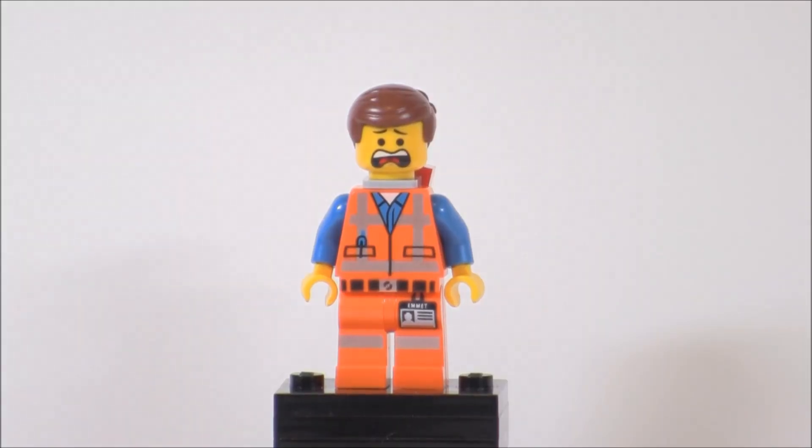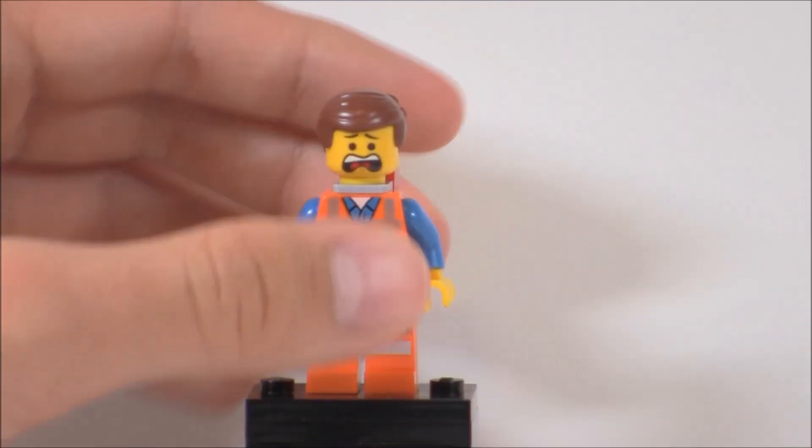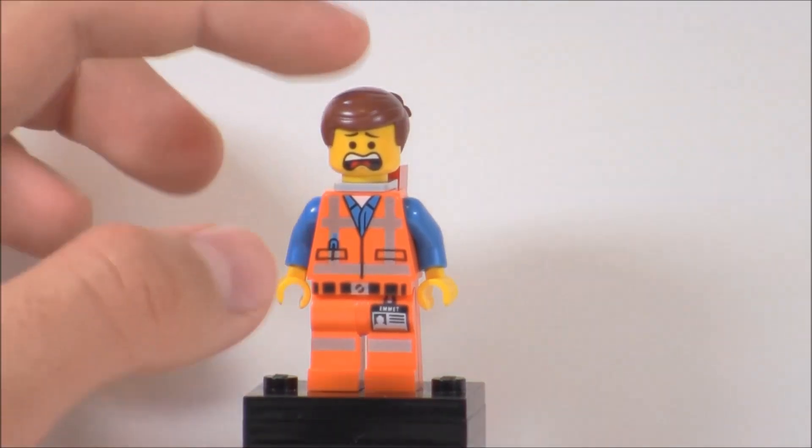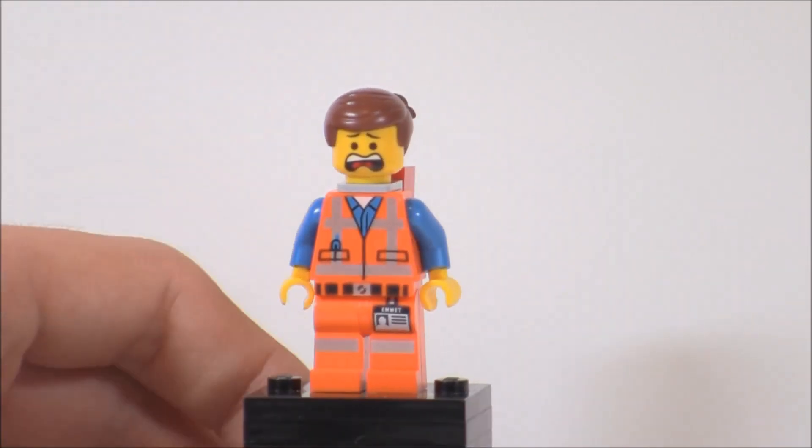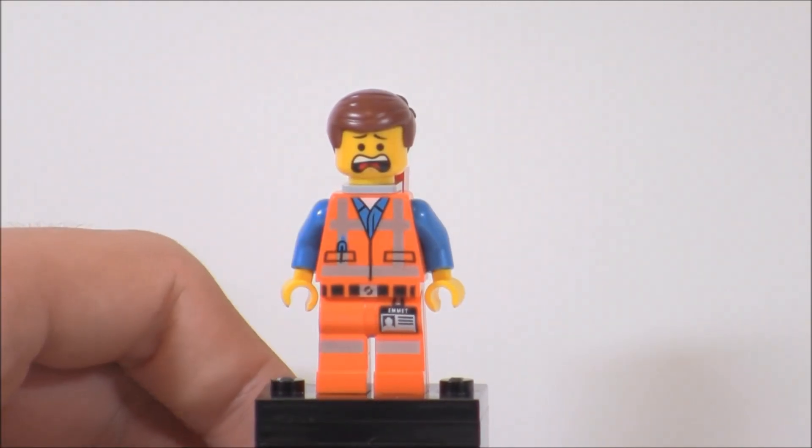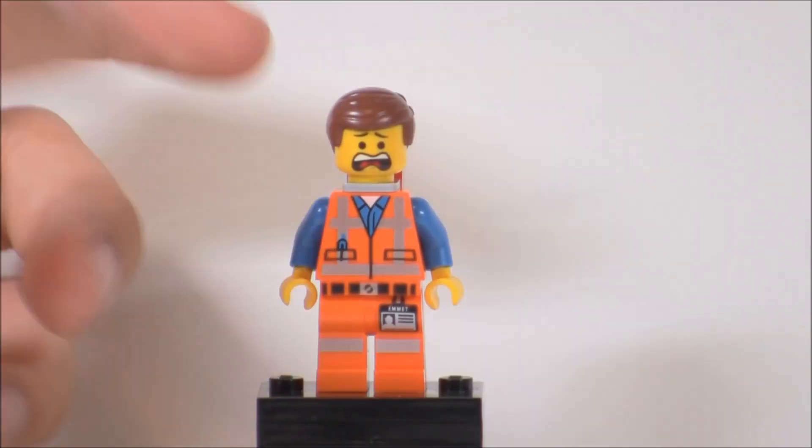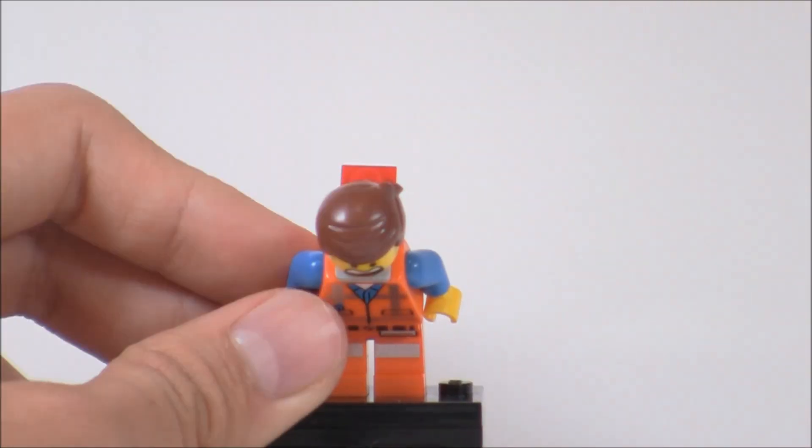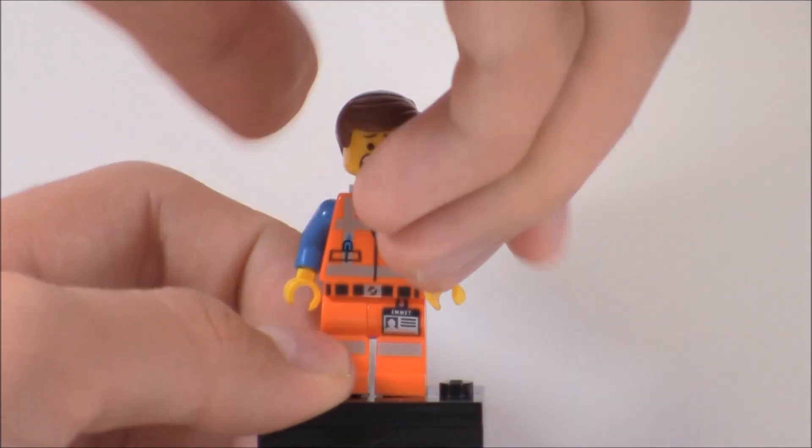The first minifigure is Emmett, the one that's most common in the sets. I just reviewed it in Getaway Glider and it's also in Super Cycle Chase, Bad Cop Pursuit, and Lord Business's Evil Lair. It's an excellent minifigure. I love Emmett because he's adorable. I know Be Kind to Rewind agrees with me. His torso and leg printing are really good. I put his scarier face on because he's about to get melted. His hair is still very detailed and I love that I'm getting a lot of him.